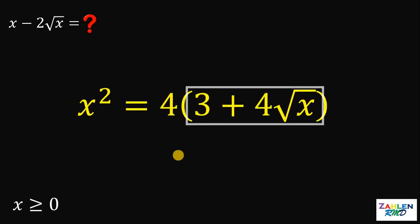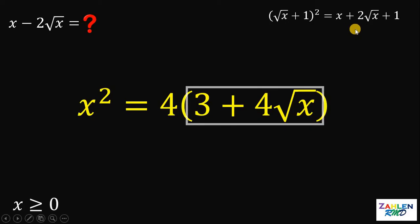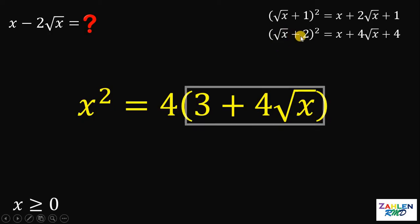Let's focus on the expression 3 plus 4 times square root of x. What we're going to do here is try to make this expression a perfect square trinomial. Recall that if we expand square root of x plus 1 quantity squared, this will give us x plus 2 times square root of x plus 1. Notice on the expansion we have 2 times square root of x, but we want 4 times square root of x. So let's see if we replace the 1 by 2. If we expand square root of x plus 2 quantity squared, this will give us x plus 4 times square root of x plus 4.